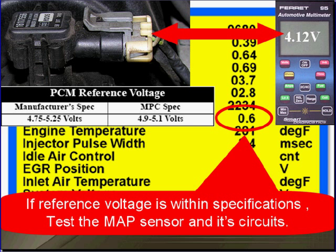The MAF may be shorted and pulling down the reference. And don't forget that other three-wire sensors can also pull down the voltage reference.